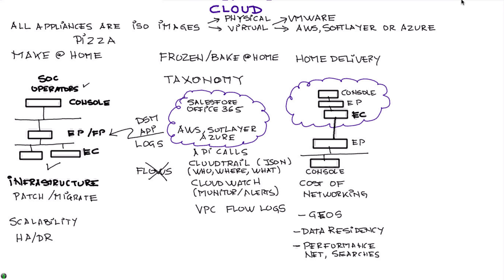Another important consideration is performance — for example, how fast you want search results, what the network latency is, and what the available bandwidth is. All of those things need to be taken into consideration. Now let's move to the next and final part of the pizza analogy, which I think is the most interesting option.